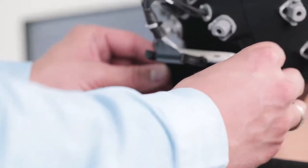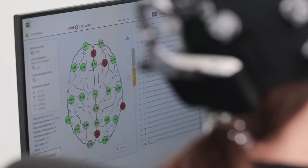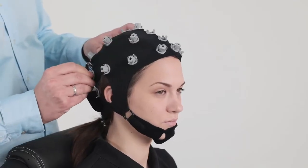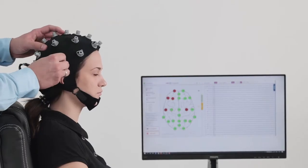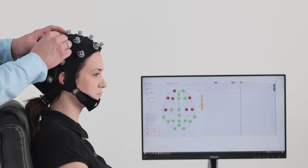To adjust the impedance values, you can apply slight pressure. Move or shake the electrode base with hands to ensure that the sponge is in good contact with the scalp.